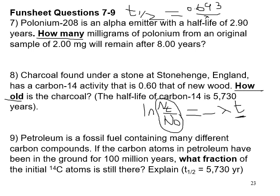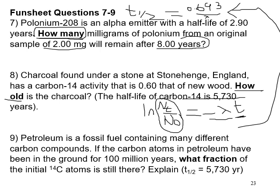For questions 7 through 9, you're still using the same first-order relationships: t₁/₂ = 0.693 / λ and the integrated rate equation ln(N_t / N₀) = −λt. Question 7 asks how many atoms remain — you're given a half-life to get λ, an original amount, and a time. Be careful to match time units between your half-life, lambda, and t. Question 8 asks how old something is (solve for t), and question 9 asks what fraction remains — all use the same two equations.